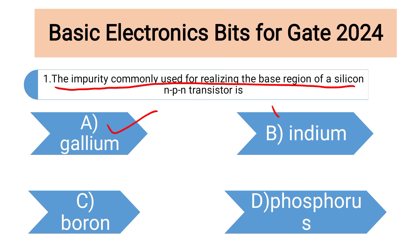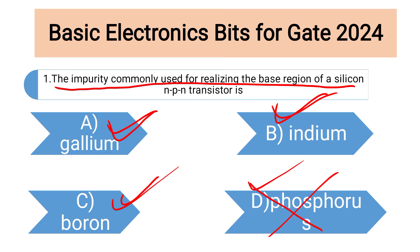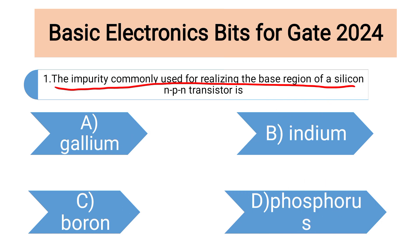Here the options are: first option gallium, second option indium, third option boron, and fourth option phosphorus. Gallium is a trivalent impurity, indium is also a trivalent impurity, boron is also a trivalent impurity, but phosphorus is not a trivalent impurity. So the fourth option is not the answer. Among A, B, or C, boron is the most commonly used semiconductor for making P-type semiconductor. So boron is the correct answer.